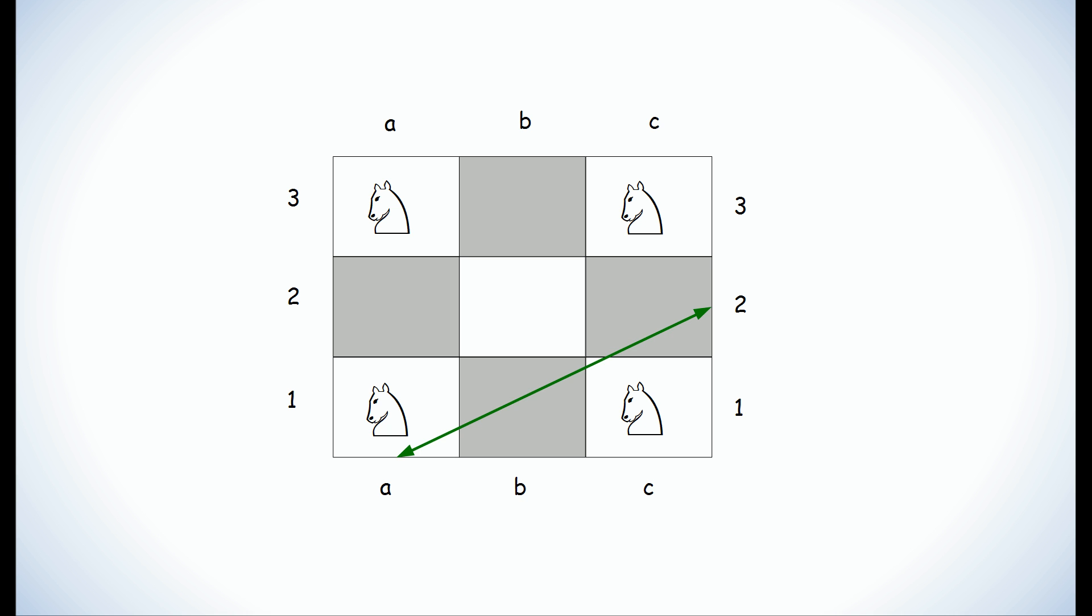So the knight on a1 can definitely move to c2, but it could also move to b3. And from those positions it can move to different squares. And we're just going to draw lines and connect them.